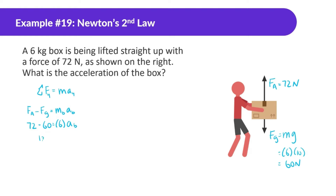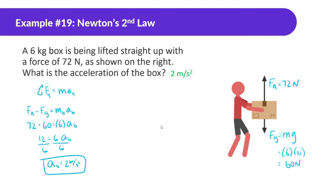Simplifying: 72 minus 60 equals 6 times acceleration. Dividing both sides by 6, the acceleration of the box is equal to 2 meters per second squared. A big point to know when we're talking about the vertical direction is we can't just disregard the force of gravity anymore, because gravity is acting in that Y direction.